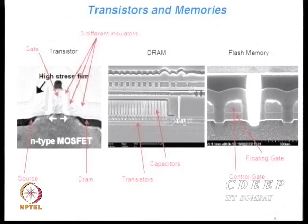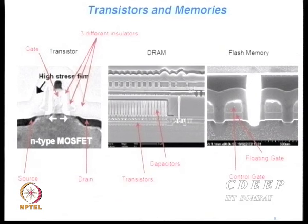Flash essentially means erasure all at once — it is electronically erased, but all bits are erased in one go. One is trying to make the access time of these memories as good as SRAMs; if that happens, SRAMs may have to go. These three different kinds of technologies are current trends with efforts underway for many years.